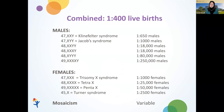Combined, sex chromosome aneuploidies occur in about 1 in 400 live births, with the most common being XXY or Klinefelter syndrome. Jacobs syndrome, or XYY, occurs in about 1 in 1,000 males born, which is equal to trisomy X — girls born with an extra X chromosome.